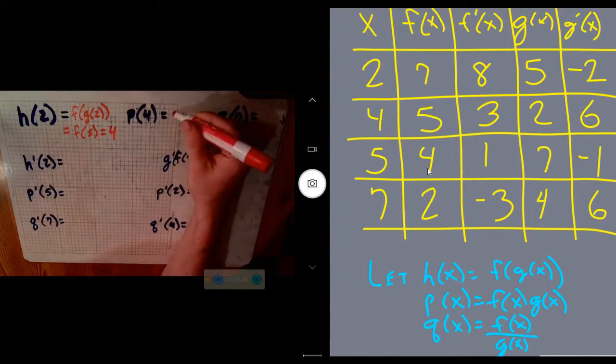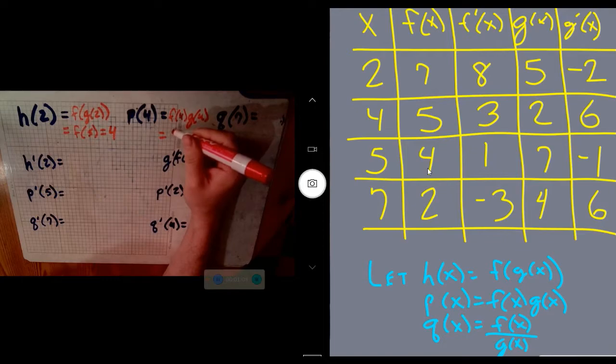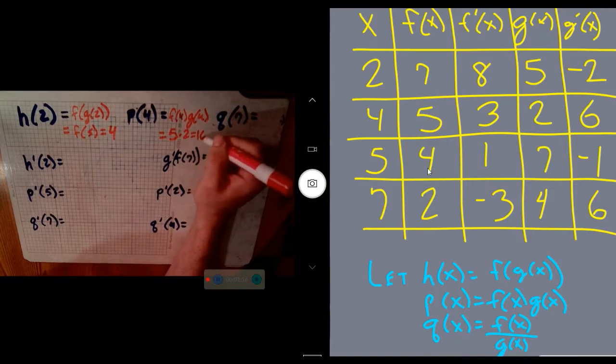Products and quotients are very easy. Product means we're doing f(4) times g(4). That's really straightforward because f(4) is 5, and g(4) is equal to 2. So 5 times 2 gives you 10.